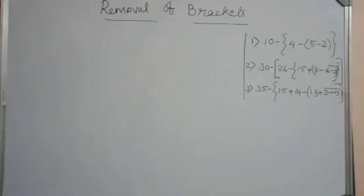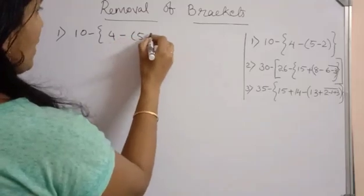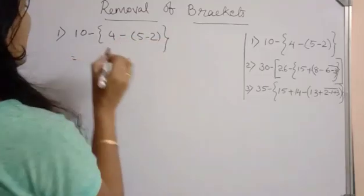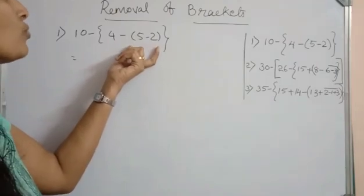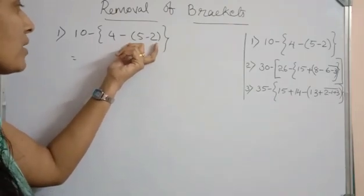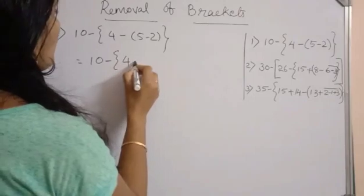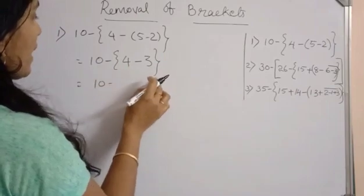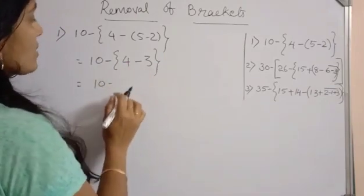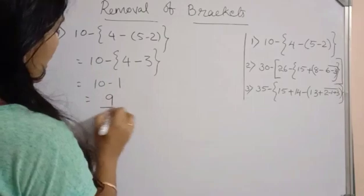Let's understand this by solving a few sums. Consider the first question: 10 minus {4 minus (5 minus 2)}. Here we have a small bracket as well as a curly bracket. First, we remove the small bracket by simplifying the terms inside: 5 minus 2 is 3. Now remove the curly bracket: 4 minus 3 is 1. Since there is a negative sign before it, this becomes minus 1. So 10 minus 1 equals 9. That is your answer.